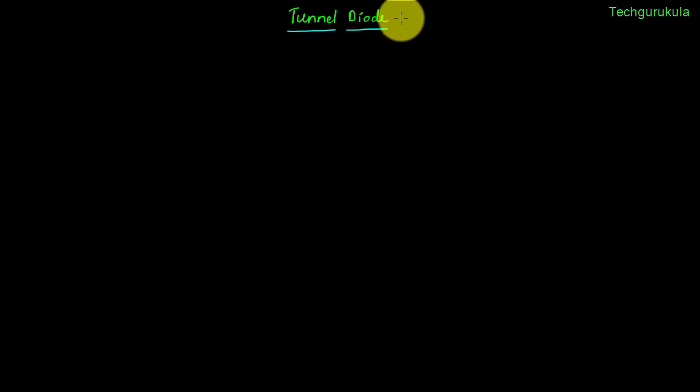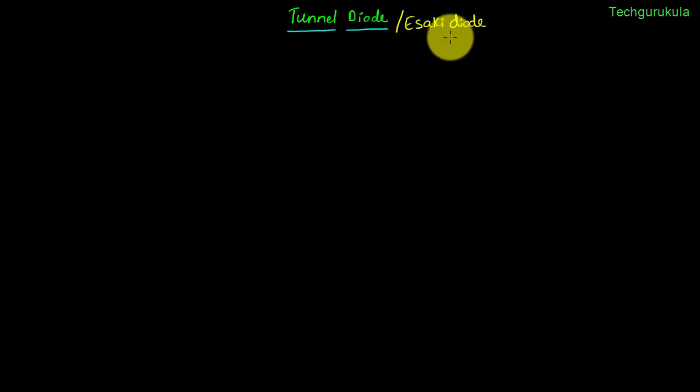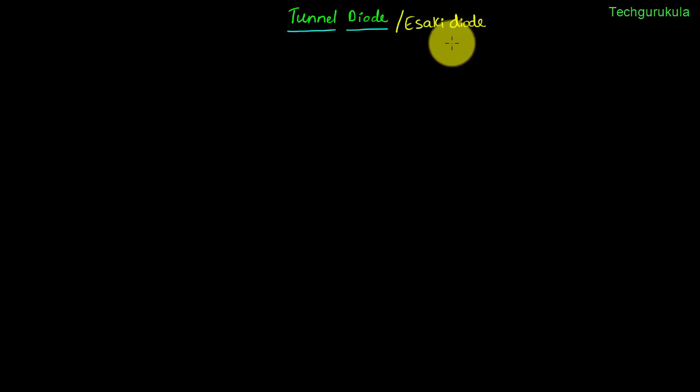In this video we are going to see the tunnel diode, which is also known as the Esaki diode, named after its inventor Leo Esaki who invented it in 1957. This diode works on a phenomenon called tunneling, that's why it is called the tunnel diode.